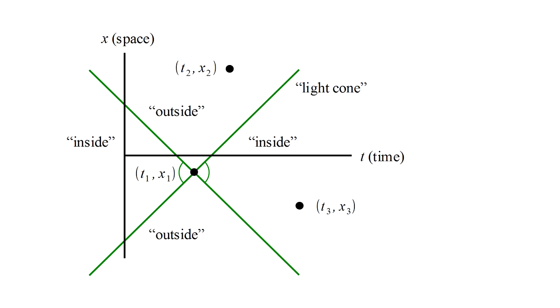We call this the light cone, and we think of it as dividing space-time into two regions, inside and outside the light cone. Event number 3 is inside the light cone. This means that the velocity required to travel from event 1 to event 3 is less than the speed of light. Therefore, it's possible,